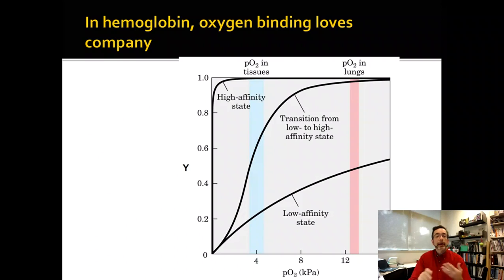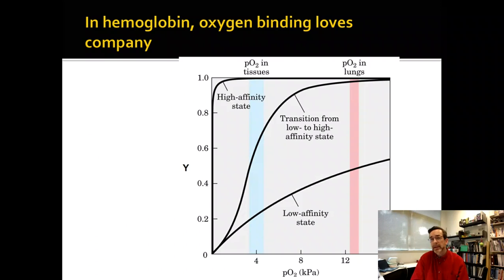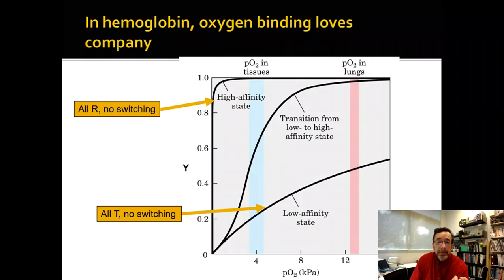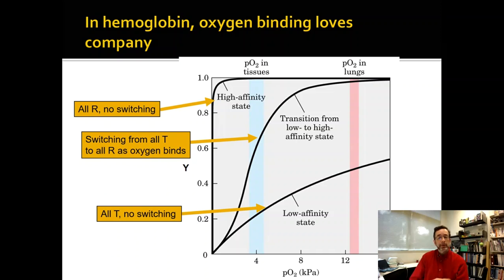If you have just a plain old binding site, it follows a hyperbola. Low affinity follows the lower hyperbola; high affinity follows the higher hyperbola. The P50 for the high affinity state is probably a hundred times lower than the P50 for the low affinity state — lower meaning tighter affinity, because the lower the P50, the tighter the affinity. If you could freeze hemoglobin in all the T state you would get the curve on the bottom; if you froze it in all the R state, you get the curve on the top. Both of these curves are hyperbolas. But in real hemoglobin that can switch from T to R, you get something different.